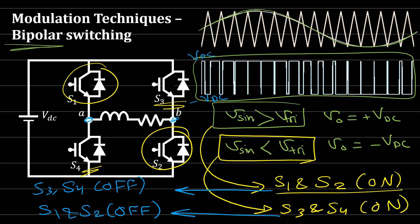Bipolar switching is the simplest modulation technique, but its drawback is that the voltage swings from plus VDC to minus VDC. When you apply an output filter to this waveform, you need a large filter to smooth it into a pure sine wave. For example, with an output of plus 200V to minus 200V, a large filter is required.